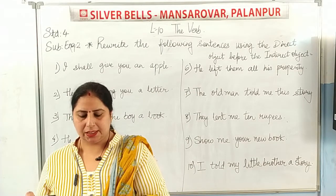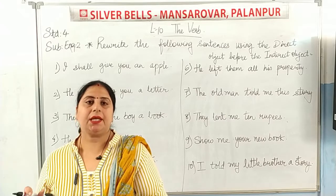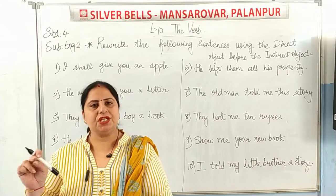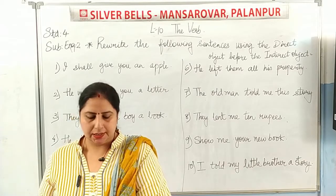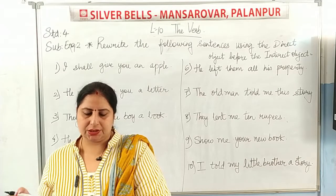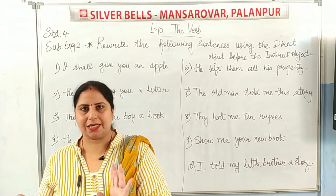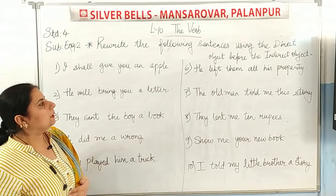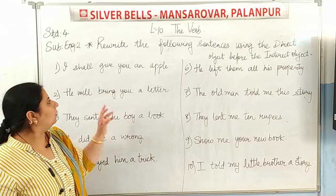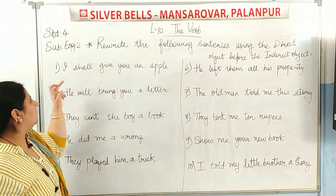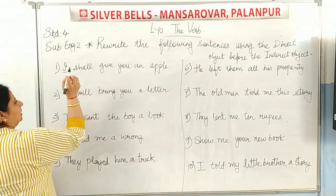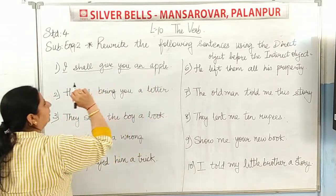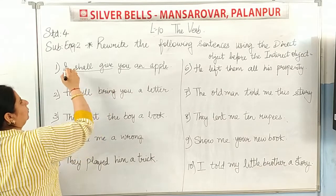Now the last one: 'Tell the student the correct answer.' Then: 'I shall give you an apple.' I is the subject, shall give is the verb, you is the indirect object, and an apple is the direct object.